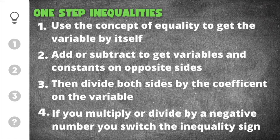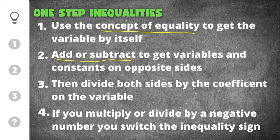There are four important tips we need to remember for solving one-step inequalities. The first is that we have to use the concept of equality to get the variable by itself — whatever you do to one side you also have to do to the other. First, check to see if you have to add or subtract to get the variable on one side and constants on the other. A constant is just another way of saying a number.